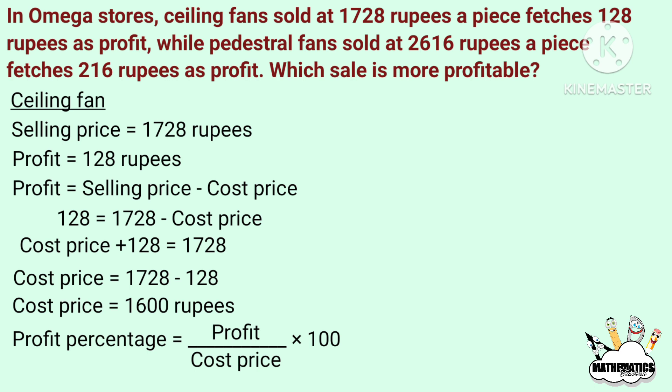Profit percentage equals 128 divided by 1600 into 100. Cancelling numerator and denominator, the answer is 8%. So the profit percentage of the ceiling fan is 8%.